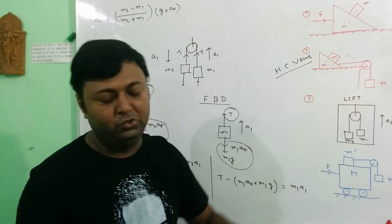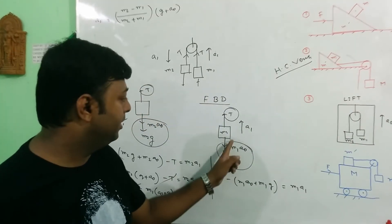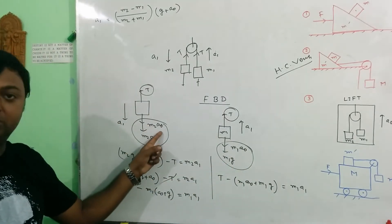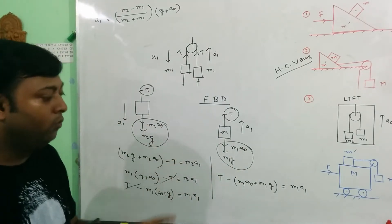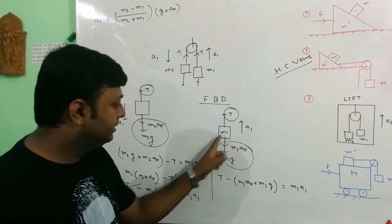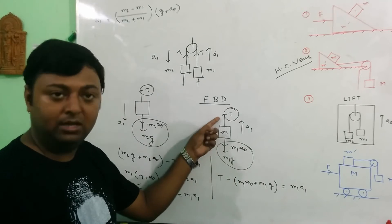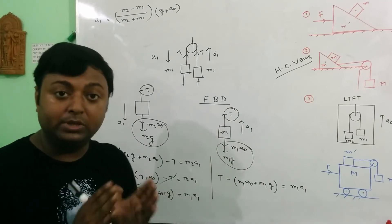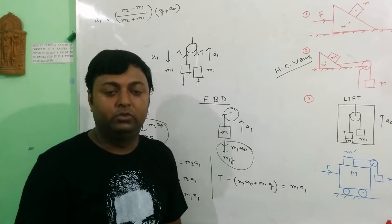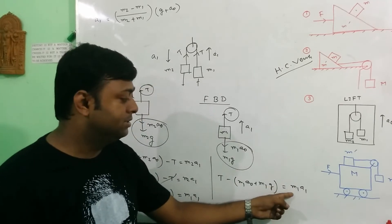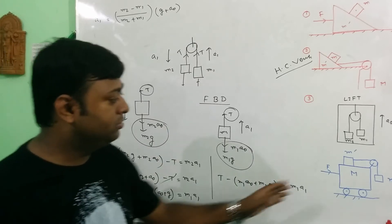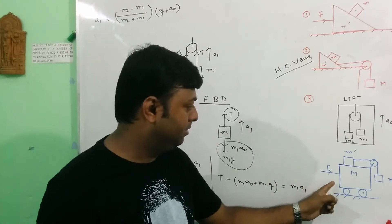For different masses, pseudo-forces are different: for m1 the pseudo-force is m1·a₀, and for m2 the pseudo-force is m2·a₀. This is very necessary for the pulley problem — the greater force minus the lower force equals the resultant force, which by Newton's second law gives mass into acceleration of the system. If we substitute a1 into any equation, we get the value of tension T.